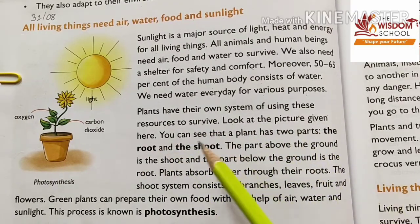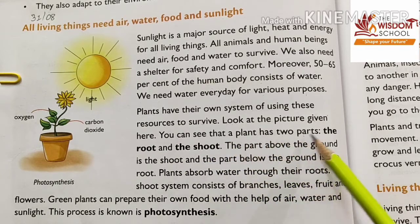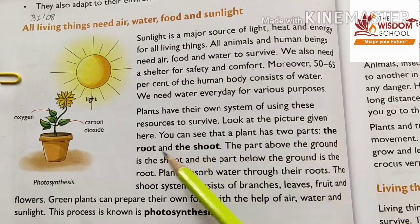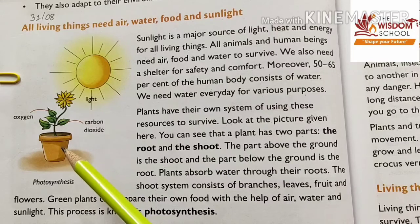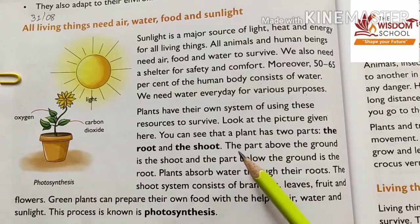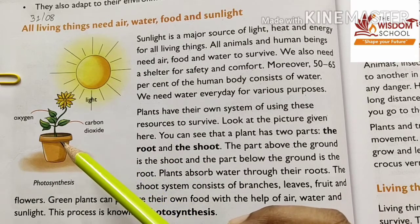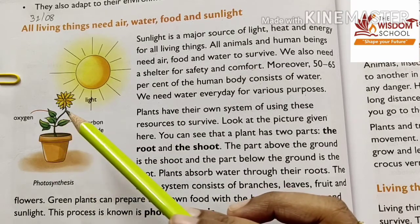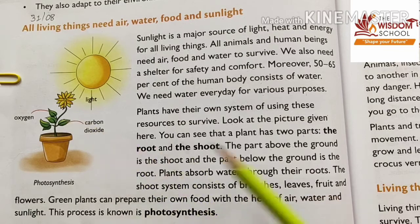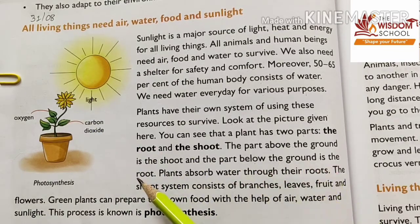Look at the picture given here. You can see that a plant has two parts: the roots and the shoots. The part above the ground is the shoot, and the part below the ground is the root.